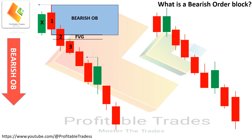Let's see another example of a bearish order block for better understanding. Applying both rules as previously — candle one has taken the high of candle Y, so rule number one is fine. But there isn't any gap between candle one and candle three.